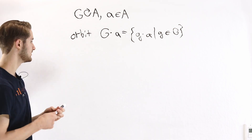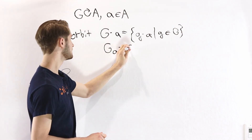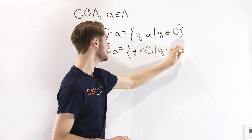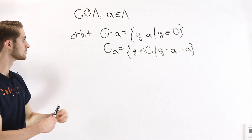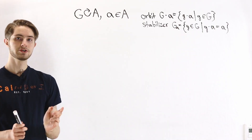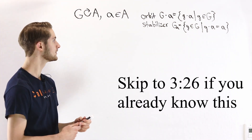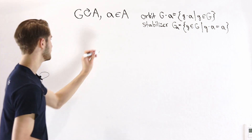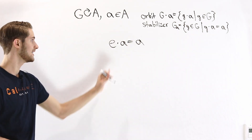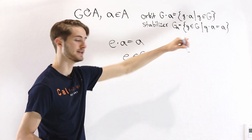We're also going to look at another set called the Stabilizer of A, written as G sub A. This is the set of elements of the group such that G times A equals A — the set of elements in the group where when we apply them to A, it leaves A the same. The first thing we're going to do is check that the Stabilizer is a subgroup of the original group G. We can check whether the identity is in the Stabilizer: one part of the definition of a group action is that E times A equals A, so E has to be in the Stabilizer of A by definition.